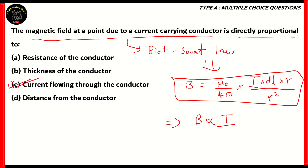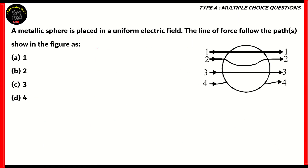Resistance and thickness of the conductor are not mentioned in the formula. Distance from the conductor is r, and the magnetic field B is proportional to r over r-cubed, meaning the magnetic field is inversely proportional to the square of the distance. Since we're asking for a directly proportional quantity, option D is incorrect. The only correct option is C — current flowing through the conductor.